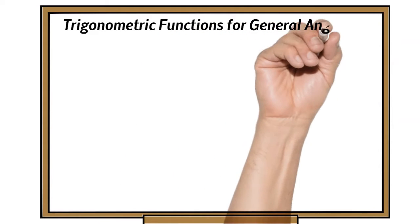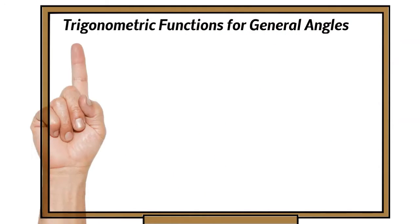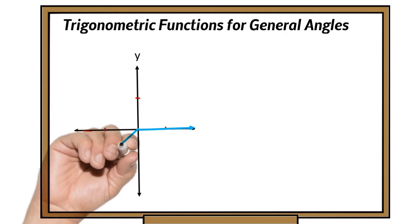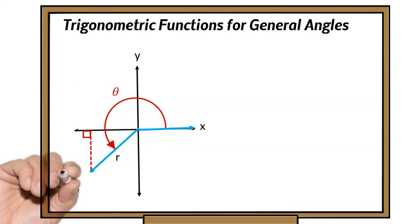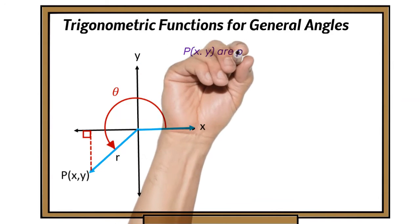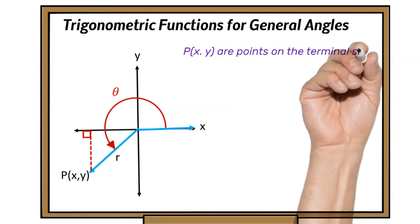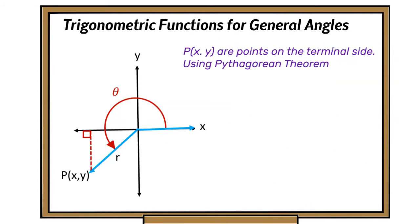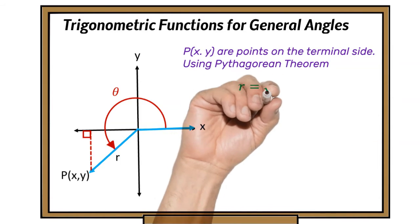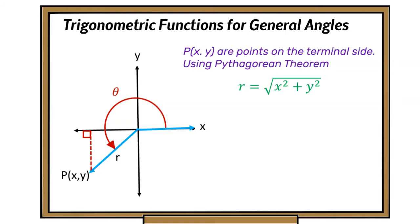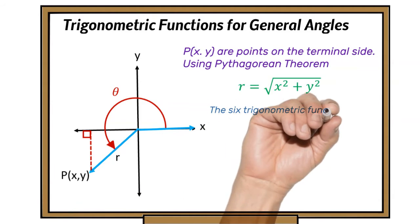Trigonometric functions for general angles. These are angles we're going to use with Pythagoras' theorem, so we'll see points with x and y on the terminal side. We can rearrange the formula so that r is the square root of x squared plus y squared.